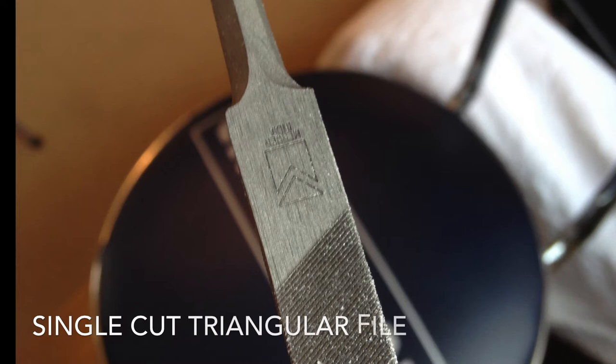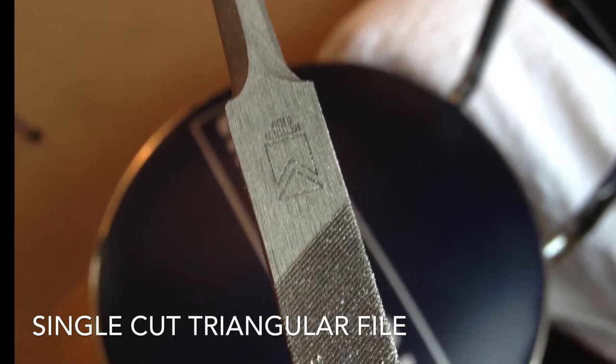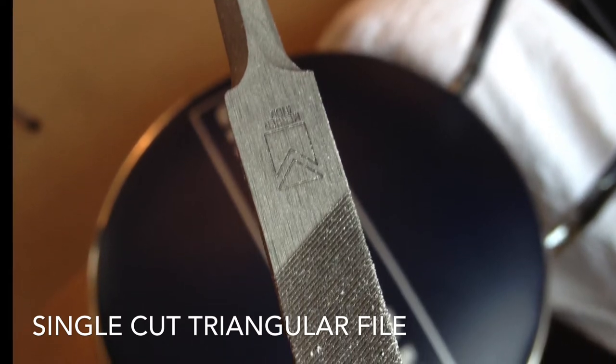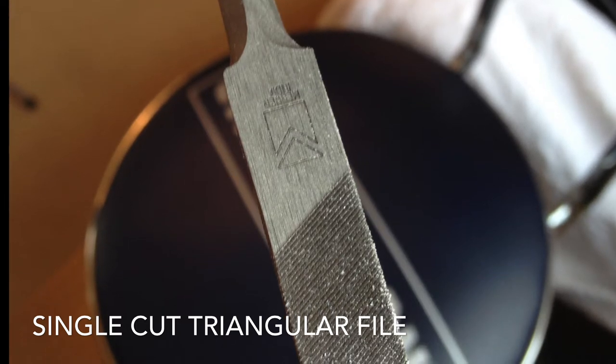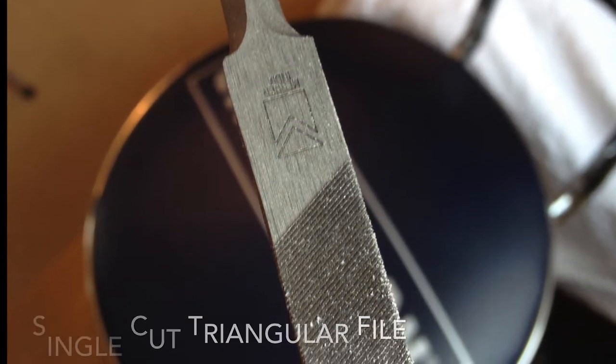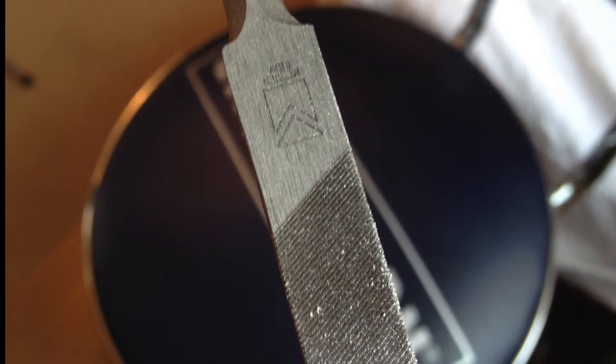This is a triangular file that's single cut. You'll notice the parallel lines do not cross and they're much closer together so this leaves a smoother surface. There are links to resources to get these tools in the show more box underneath this video window.